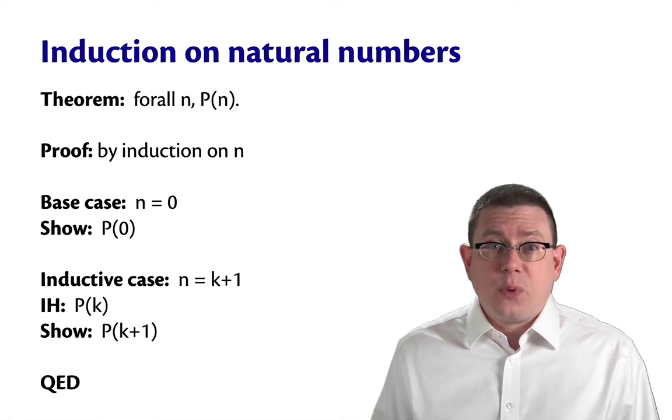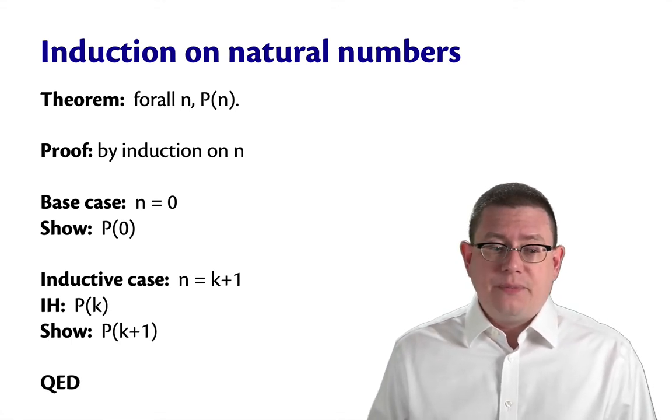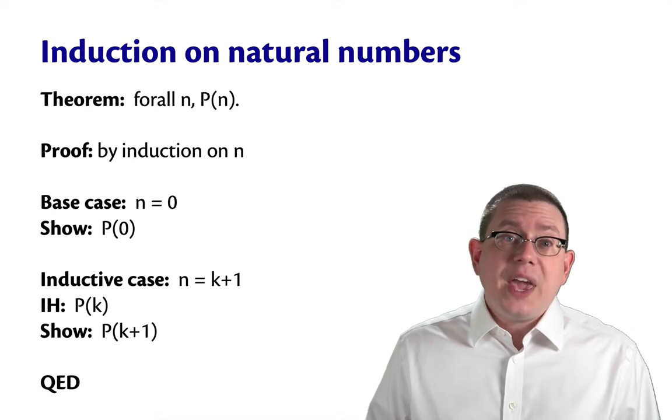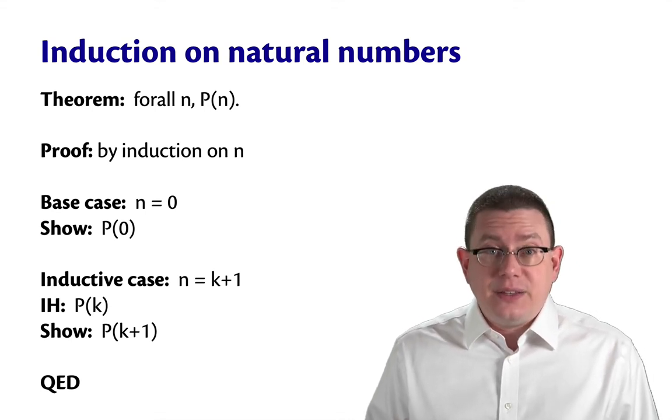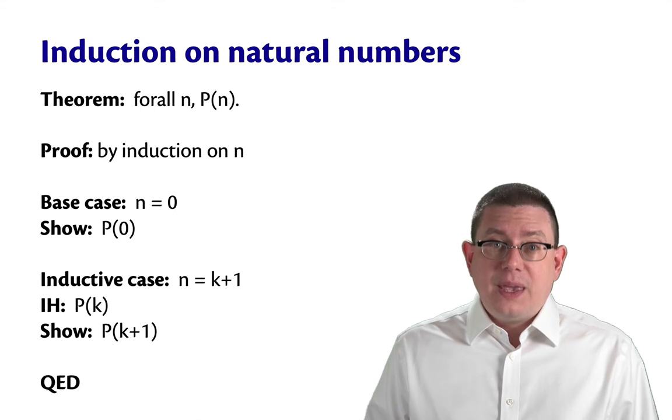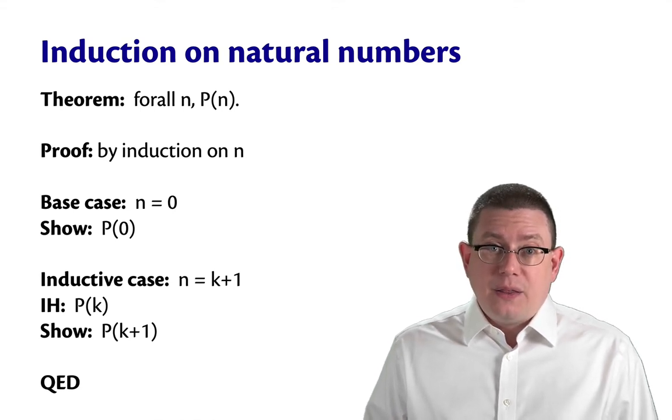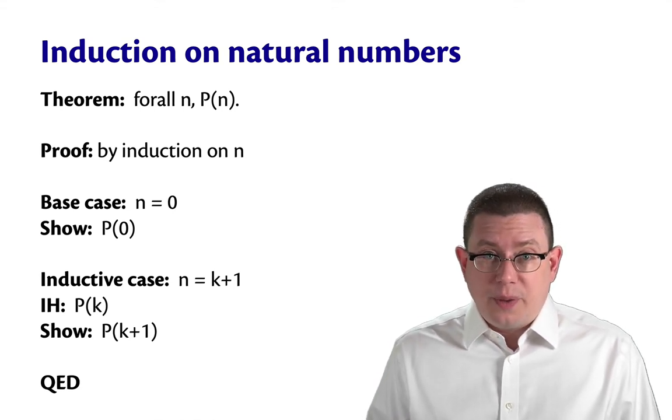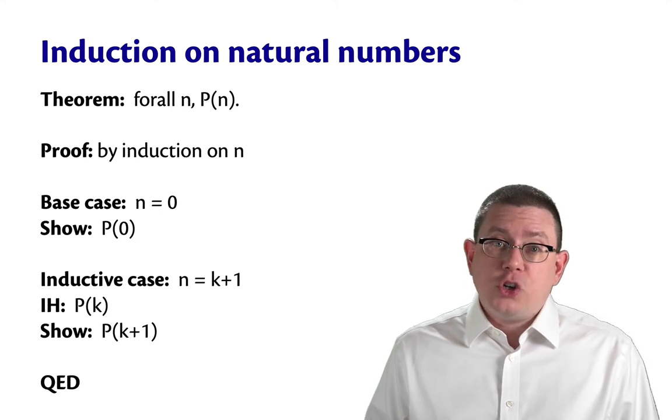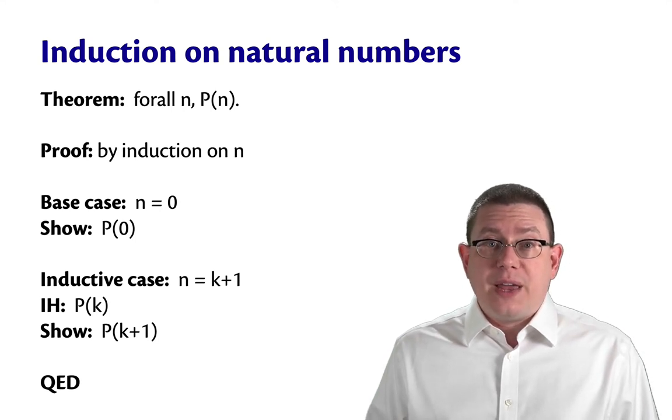And the proof technique we're going to use is induction on n. And there will be two cases in this proof, a base case and an inductive case. In the base case, we're going with the smallest natural number, which is 0. And we're going to show that the property P holds of that natural number 0.